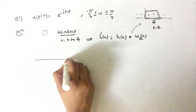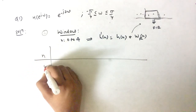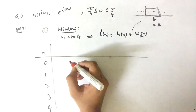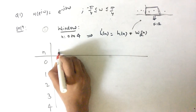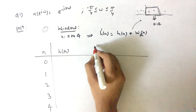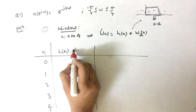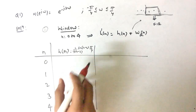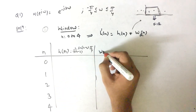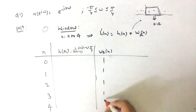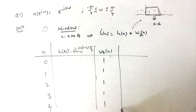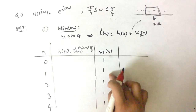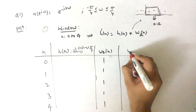Let's draw the table. The range of n is 0, 1, 2, 3, 4. We compute h(n) = (1/π(n−2)) · sin((n−2)·π/4) for each value. The rectangular window w(n) is always equal to 1 in the range 0 to 4 and 0 otherwise. So h̃(n) = h(n) · 1 = h(n) in this range — that is our final answer.